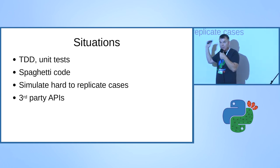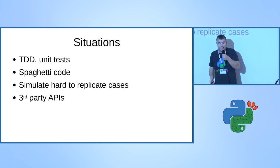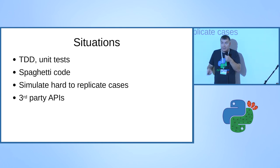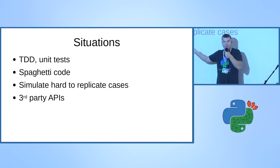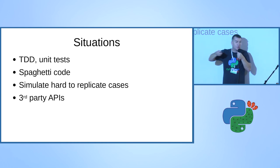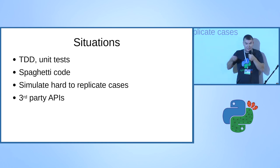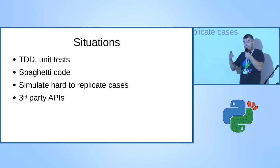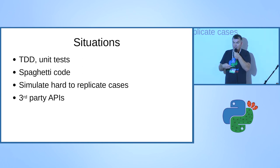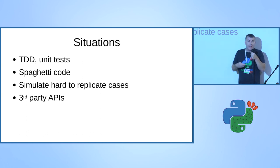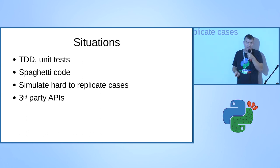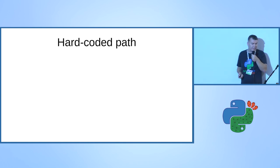Monkey patching or mocking in general can help because we can replace some part of the system with stuff that we control, then test the rest of the system much better. Third-party systems can be mocked or simulated, and we can tell the simulator to break or return incorrect data - then we can test how our system behaves when incorrect data is returned by the third-party system.